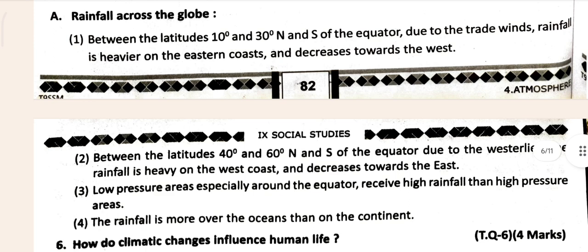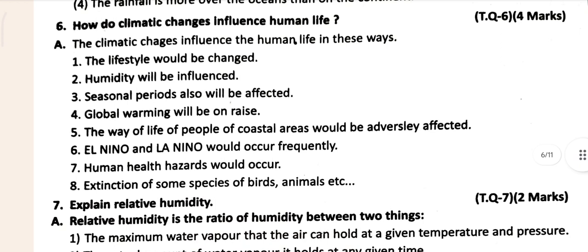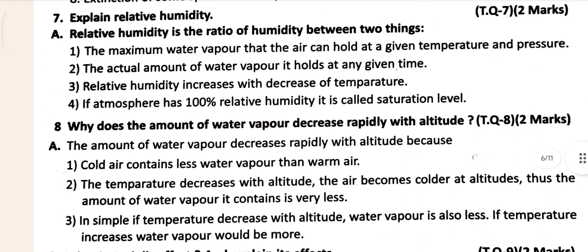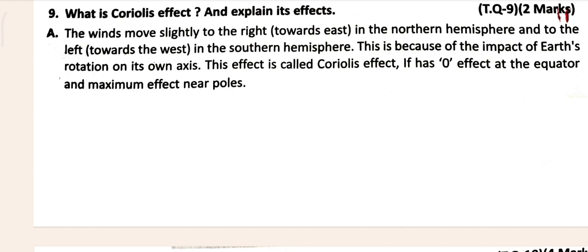This is our fifth question-answer, and this is the sixth question: 'How does climate change influence human life?' This is our sixth question-answer. Then go to the seventh question-answer, and the eighth one is here also. After the eighth, see the ninth question with answer. Then come to the tenth: 'Identify the location of the given' — and this is the identification here.